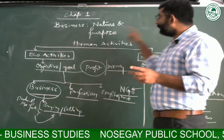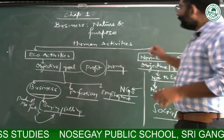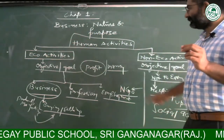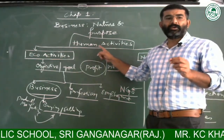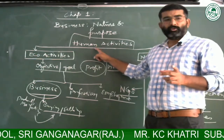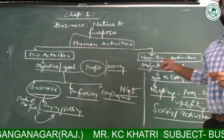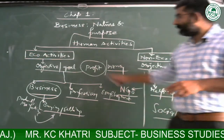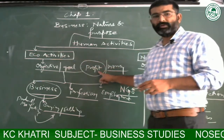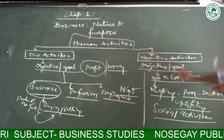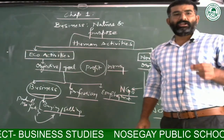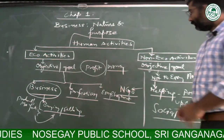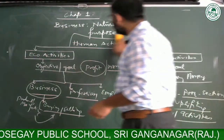So, the extract from this board is that we have to understand human activities. When discussing human activities, they can be classified into two sections: one is economic, and the second is non-economic activities. Economic activities are where we earn money or profit. Non-economic activities are performed to gain sympathy, attraction, or love — the ultimate objective is not to earn profit or money.